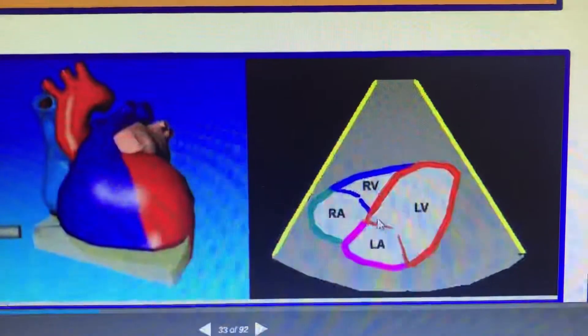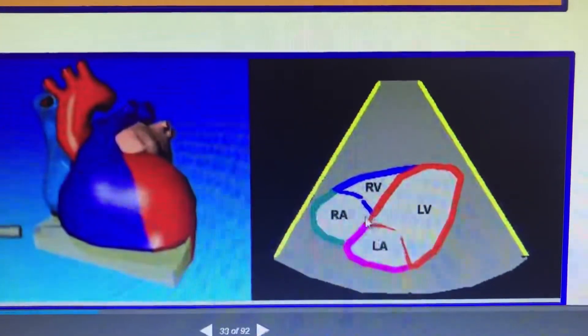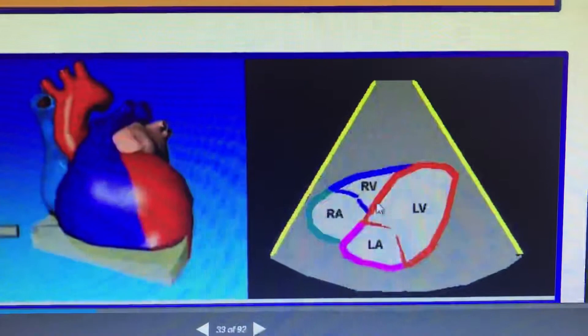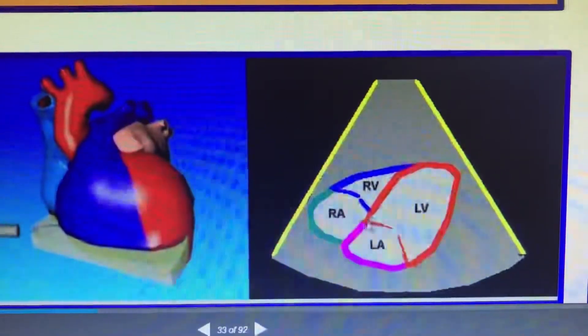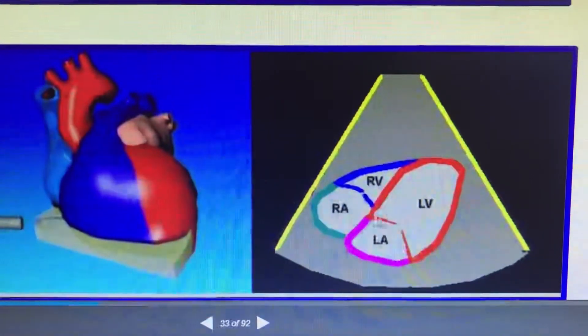The IAS and the perimembranous septum, which is between the tricuspid valve and the mitral valve, will be seen very well. The atrial IAS part of the membranous septum is particularly well visualized.